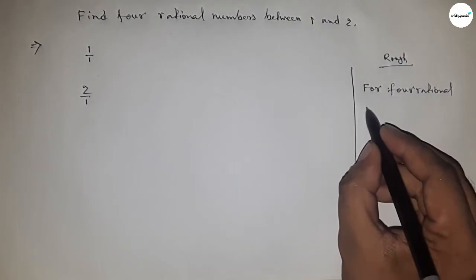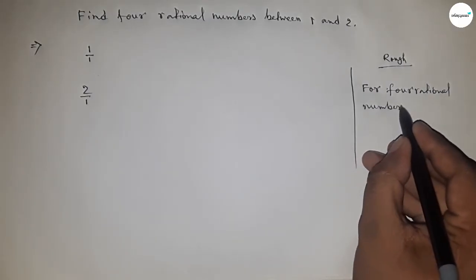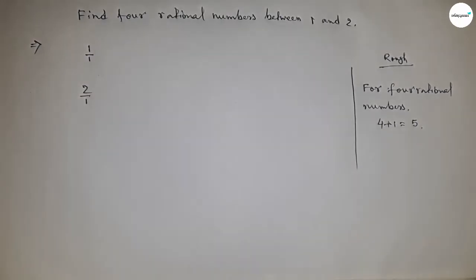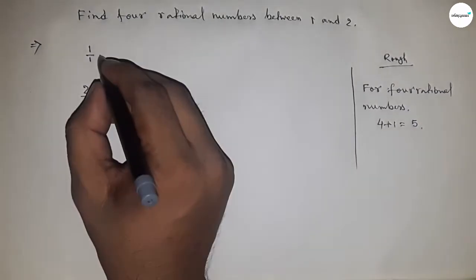We'll multiply both rational numbers by four plus one, equal to five. So we have to multiply both numbers by five.